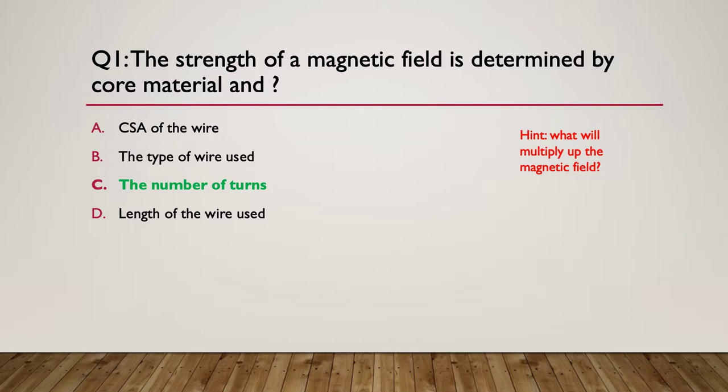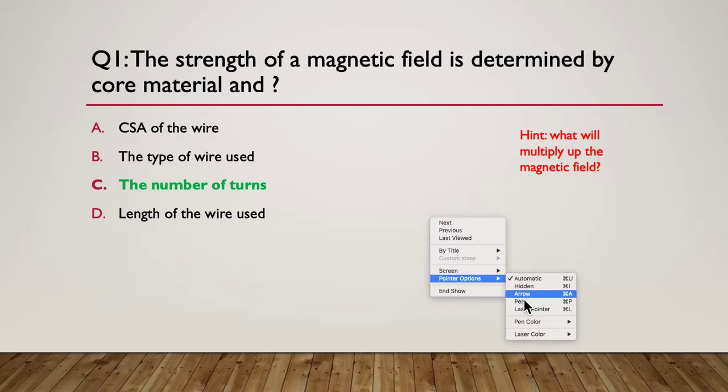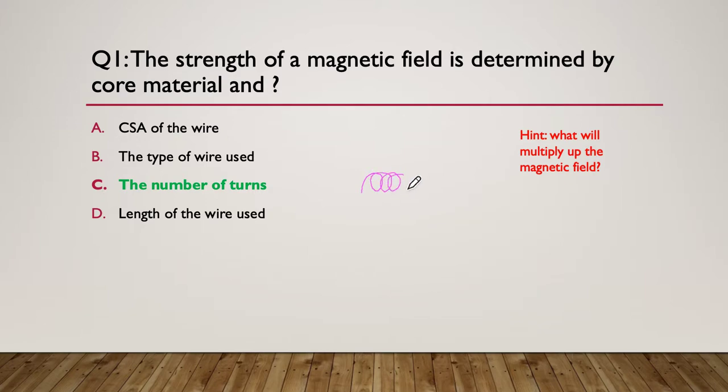And here's the answer. The number of turns. If you remember, the more turns that we add together, effectively it means we're putting more and more conductors side by side with all the current going in the same direction. Therefore we end up with a much stronger magnetic field. So all we're doing is putting lots and lots of little magnetic fields beside each other, creating one big solid magnetic field. So it's the number of turns.